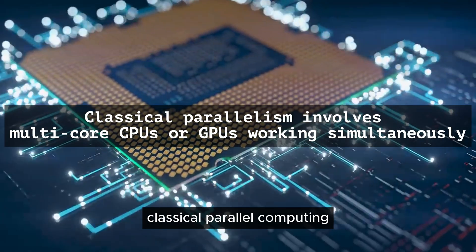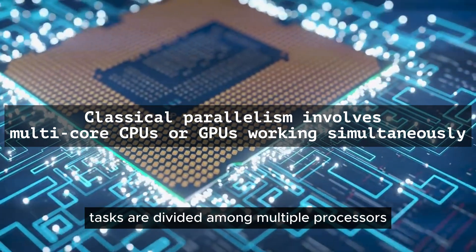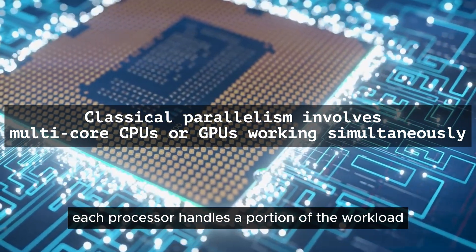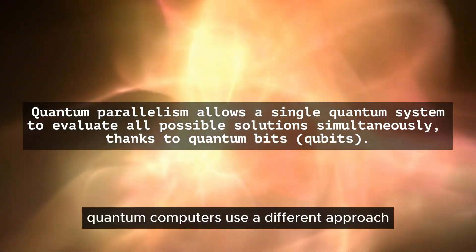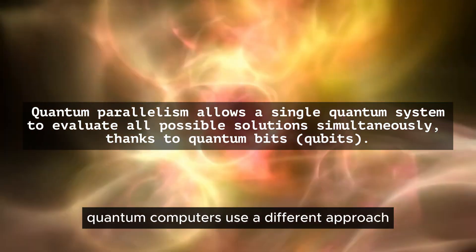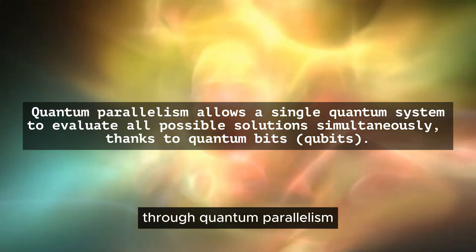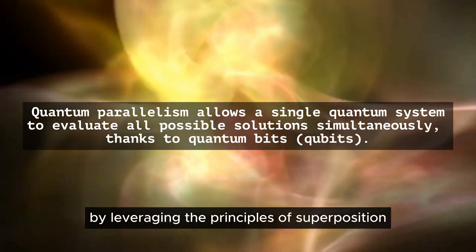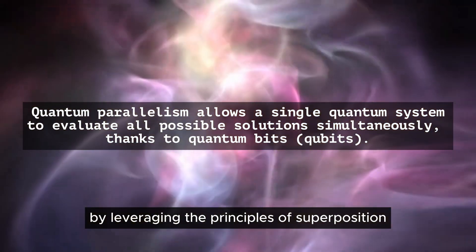Classical parallel computing tasks are divided among multiple processors. Each processor handles a portion of the workload independently. However, quantum computers use a different approach. Through quantum parallelism, they process multiple possibilities at the same time by leveraging the principles of superposition and entanglement.